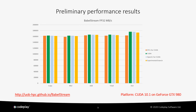Here we see results of the DPC++ CUDA backend with an internal development branch that has a different implementation for event handling, shown in yellow. Performance in all cases, including DOT, is now much closer to native CUDA. This is still in development, but we hope to see this reach tip along with a number of other performance improvements soon.